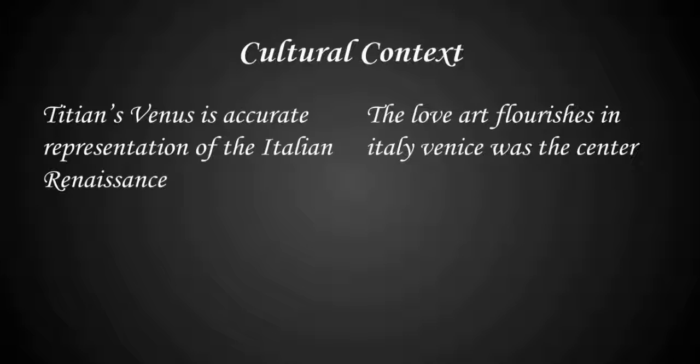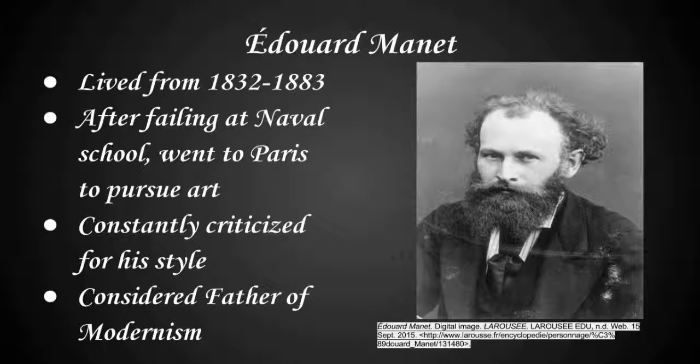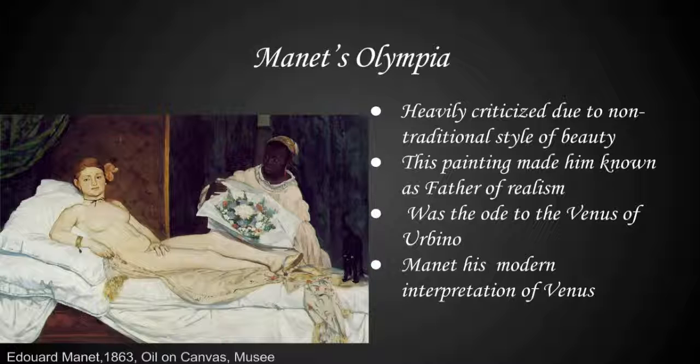Now we have Edouard Manet, a painter who lived from 1832 to 1883. After failing naval school, he went to Paris, and he was constantly criticized for his style. He is considered the father of modernism. His style was realistic, and he was later pushed to leave France because of his work. His main criticism came from his Olympia, because it was a non-traditional representation of beauty. This painting made him known as the father of modernism.